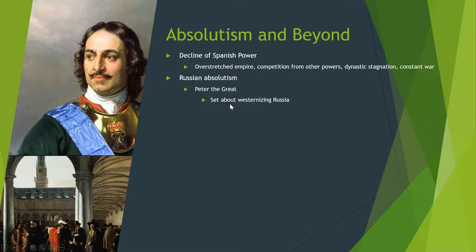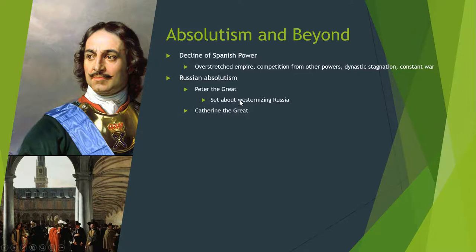Peter and his successors are always obsessed with gaining access to a warm water port and access to Mediterranean ocean trade, despite their huge land-based empire. Russia feels they are missing out on the fruits of overseas expansion and overseas trade. Peter famously goes around cutting off the nobles' very long Russian beards, and is pictured in his state portrait without a beard. Peter the Great and Catherine the Great, his successor, are two excellent examples of absolute rulers.